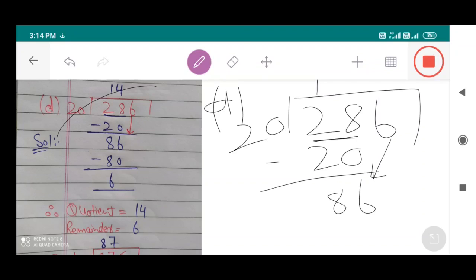20 multiplied by 4 equals 80. 86 minus 80 equals 6.